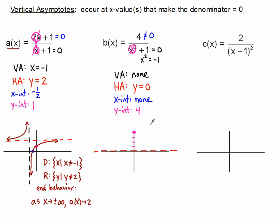I want to show you what the graph looks like. This graph kind of looks like a mountain — a little hill. Now that we have the graph, we can talk about domain and range. Since there are no vertical asymptotes, there are no restrictions on what we can plug in for x. x can be anything — x is the set of all real numbers.